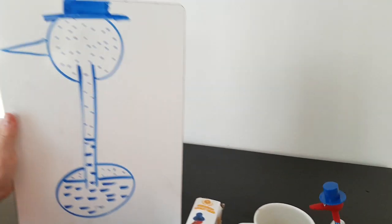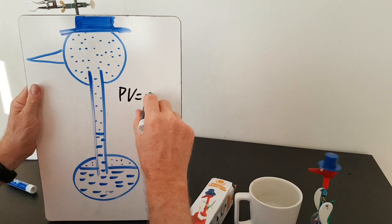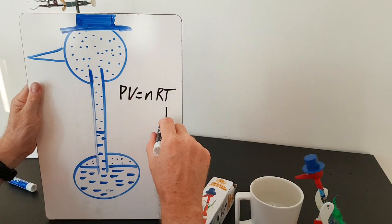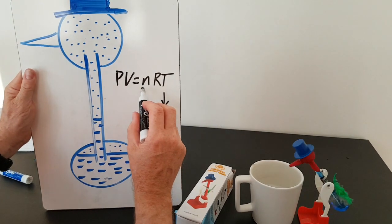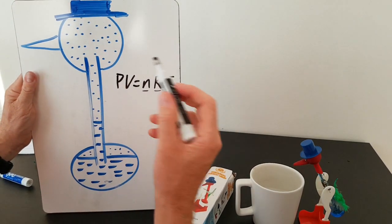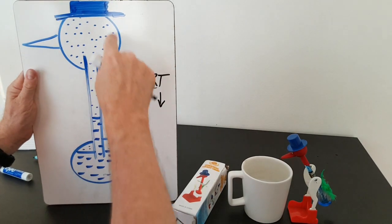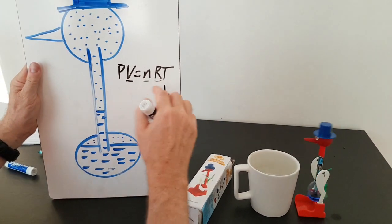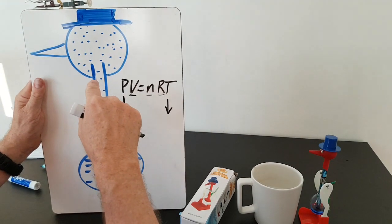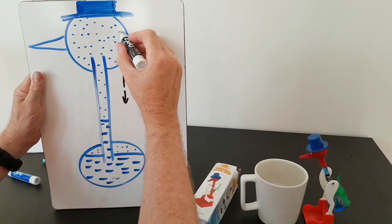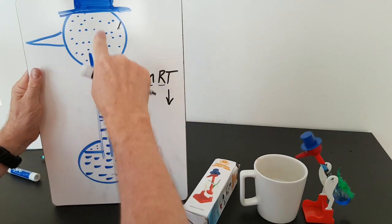As the head gets cooler, the pressure decreases in the head. Since PV = nRT is the gas law, the temperature of the gas in the head is going down. The number of molecules of gas in the head don't really change, the gas constant doesn't change, and the volume is also fixed — the head has a fixed glass volume. So as the temperature decreases, so does the pressure. When the gas particles hit the glass, they're hitting less frequently and with less energy, so the pressure is decreased in the head.